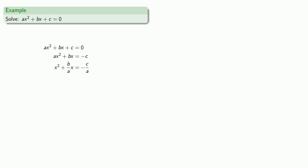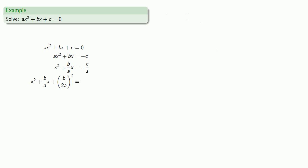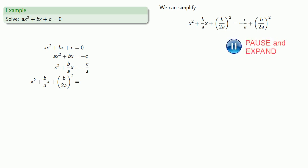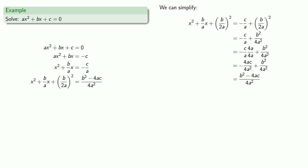Now let's complete the square. Our x squared term is x squared, and our x term is b over a times x, which equals 2 times x times b over 2a. So we need to add b over 2a, quantity squared, to both sides. The right-hand side becomes negative c over a plus b over 2a squared. We expand b over 2a squared, find a common denominator, and add the numerators. The left-hand side must be the square of x plus b over 2a.